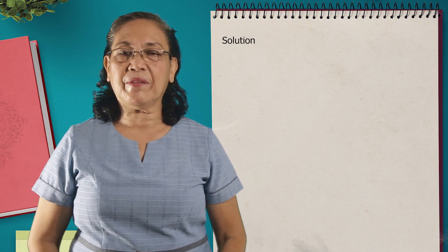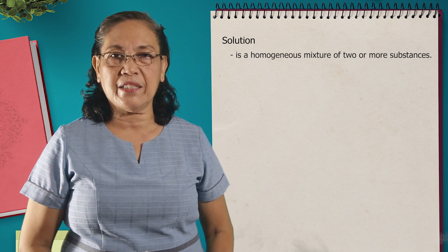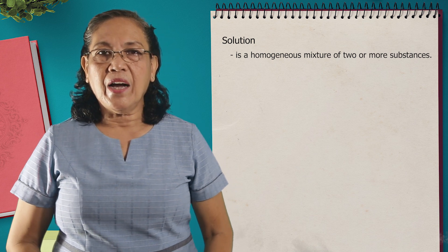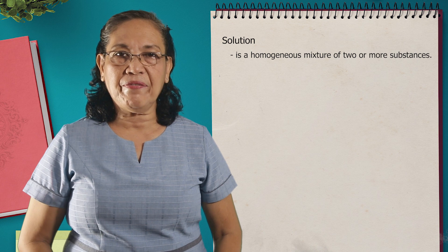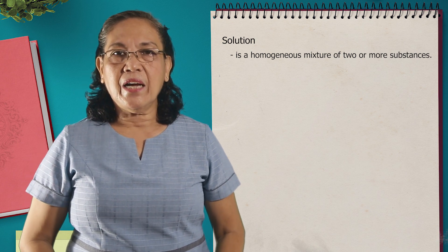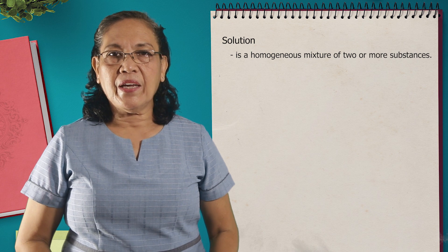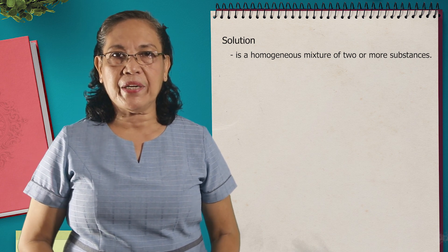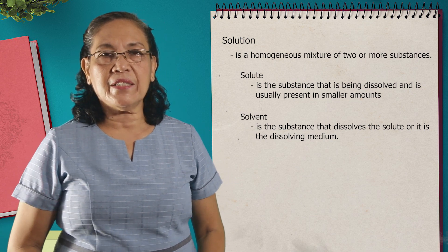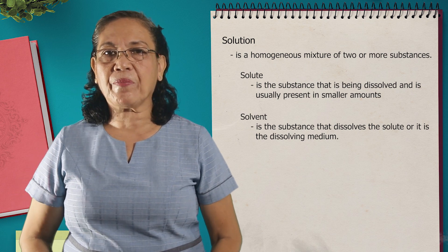Now, what is a solution? A solution is a homogeneous mixture composed of two or more substances. When we say homogeneous mixture, this means that the substances in the mixture are evenly distributed throughout a single phase or throughout the system. Furthermore, it means that the atoms, the ions, and the molecules are thoroughly mixed such that each part of the mixture has uniform and similar properties. A solution is composed of a solute and a solvent. The solute is that substance which is being dissolved in a solvent, and the solvent is the dissolving medium.